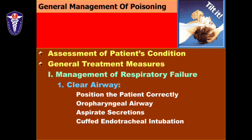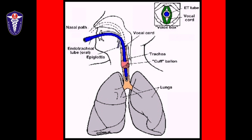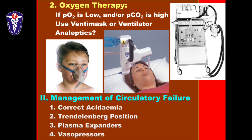Moving on to general treatment measures: starting with respiratory failure, you clear the airway. As the patient's sensorium drops, the tongue may fall back and obstruct the airway, so positioning the patient correctly is very important. Adjuvants like an oropharyngeal airway can help keep the airway patent. If there is pooling of secretions you aspirate them. If conscious level is low and respiration is compromised, you proceed with endotracheal intubation with a cuffed tube to secure the airway. If the patient is hypoxemic, you provide oxygen therapy.